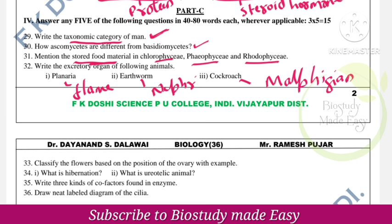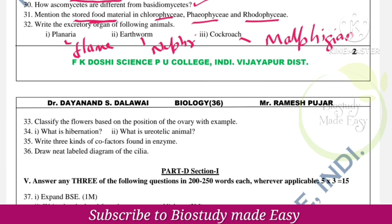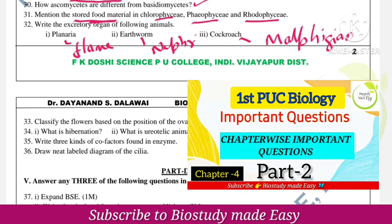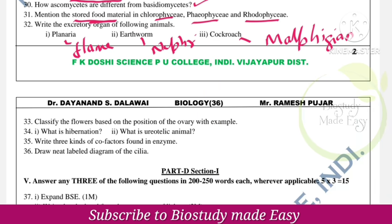Classify flowers based on the position of ovary with examples. What is hibernation? What is a ureotelic animal? These are all chapter-wise important questions to prepare.